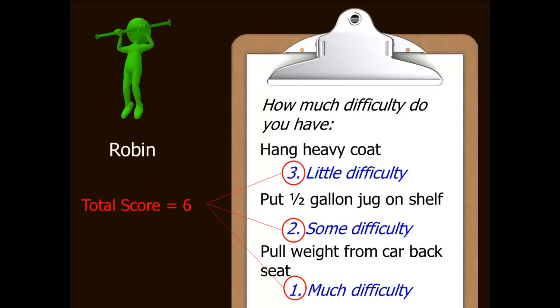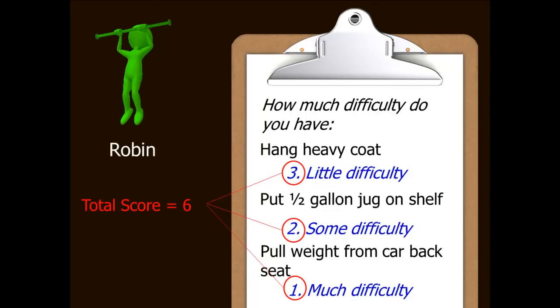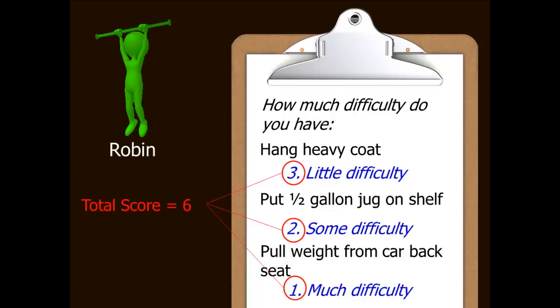Now Robin has been presented three items, but notice that we are ignoring the assumption that everybody takes the same items. Robin is asked about difficulty hanging a heavy coat, putting a half-gallon jug on a shelf, and pulling something heavy from the backseat of a car into the front seat. Robin's responses are, in order: little difficulty, some difficulty, and much difficulty. The corresponding scores are three, two, and one. Adding them up, Robin is also given a score of six.